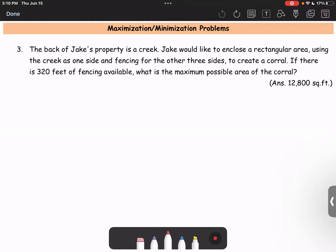Let's look at maximization-minimization problems as the application of quadratic functions. This problem: the back of Jake's property is a creek. Jake would like to enclose a rectangular area using the creek as one side and fencing for the other three sides to create a corral. If there is 320 feet of fencing available, what is the maximum possible area of the corral?